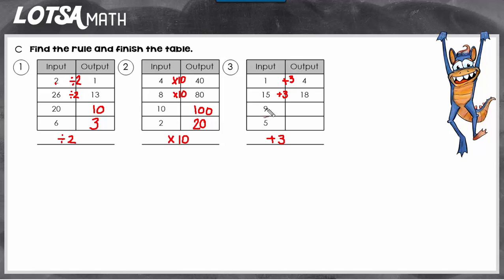So now all we have to do is take the inputs, add 3 to them, and we'll get the output. So 9 plus 3 is 12. 5 plus 3 is 8.